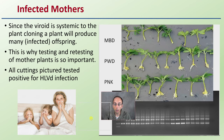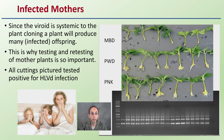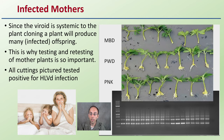Infected mother plants are also a concern. Since the viroid is systemic to the plant, cloning it will produce many infected offspring. It's not advised to take cuttings from an infected mother plant. Testing and retesting mother plants is critically important — all cuttings pictured tested positive for viroid infection. If you get a mother that tests positive, remove that mother and do not take any clones from it, as you'll just be spreading the infection even faster.